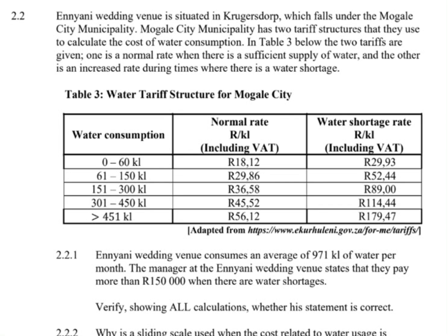The first question: Iniyani Wedding Venue consumes an average of 971 kiloliters of water per month. The manager at the Iniyani Wedding Venue states that they pay more than R150,000 when there is a water shortage. Verify, showing all calculations, whether his statement is correct. So, the key word here is water shortage, meaning that we must use the water shortage rate.